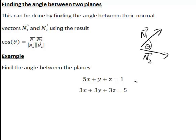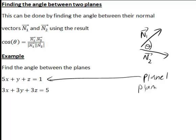So let's consider the following example, where we have the planes 5x plus y plus z equals 1, I'll call that plane 1. And we also have 3x plus 3y plus 3z equals 5, I'll call that plane 2.